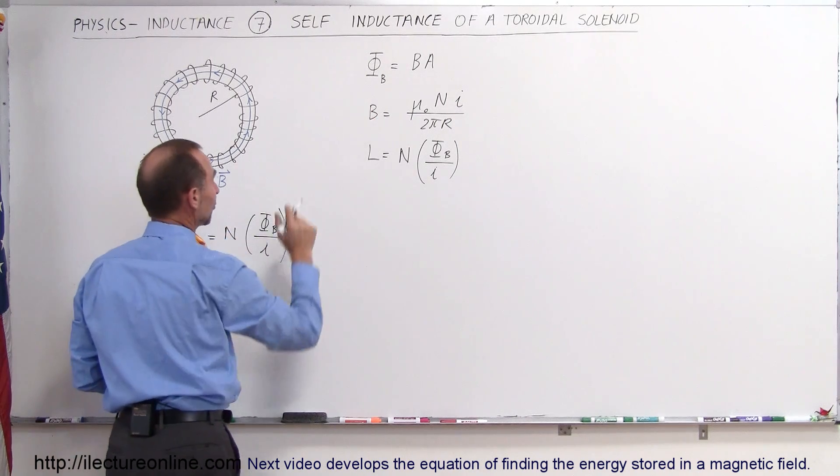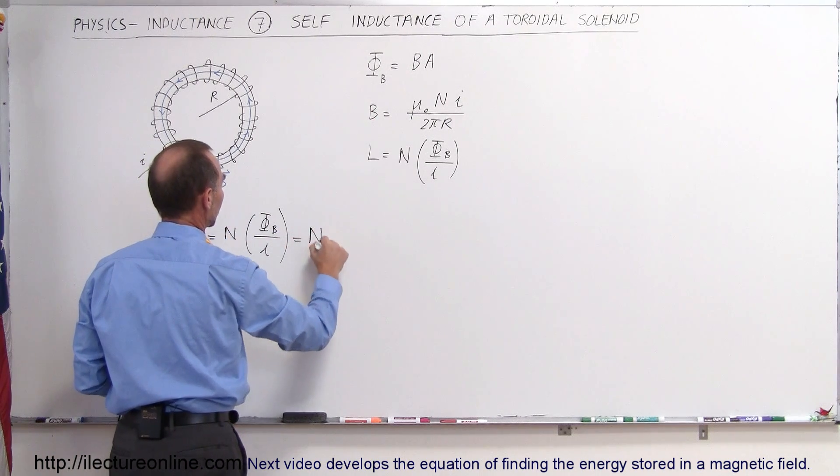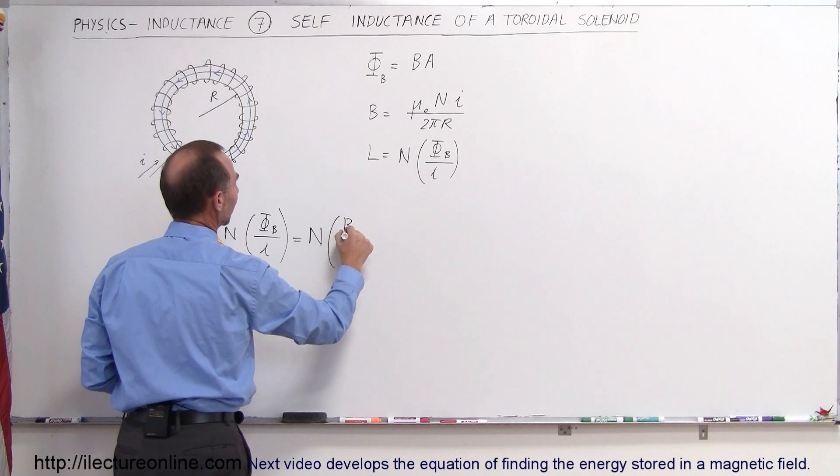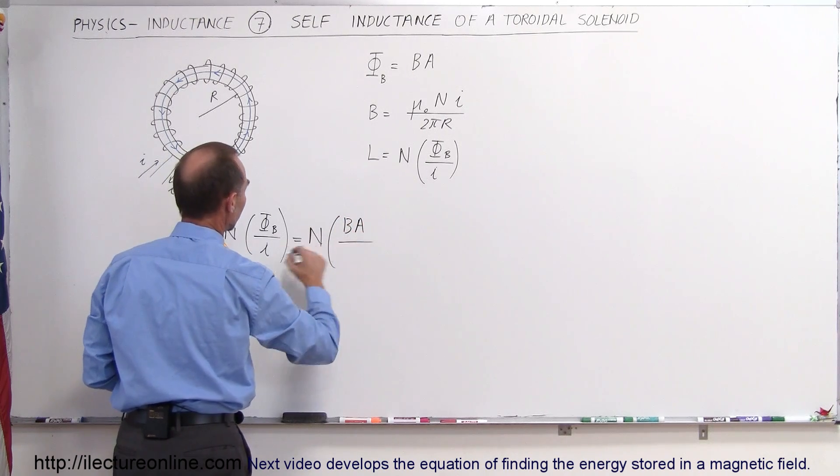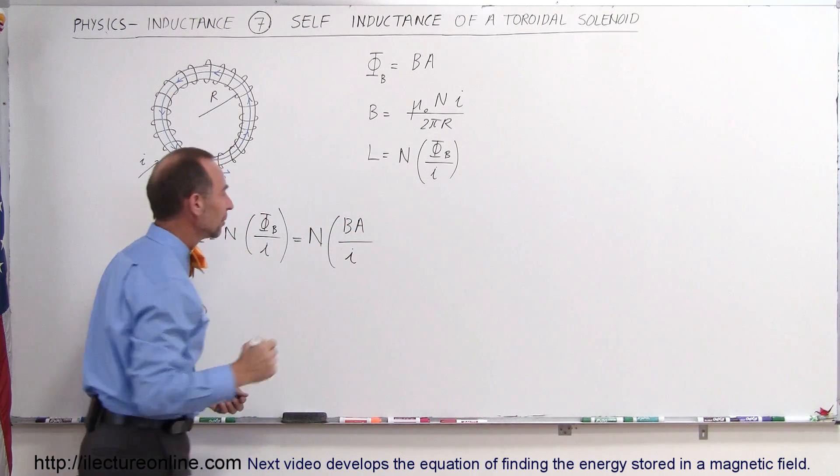Of course the magnetic flux can be written as B times A, so this is the number of turns times the magnetic field times the cross-sectional area divided by I, the current.